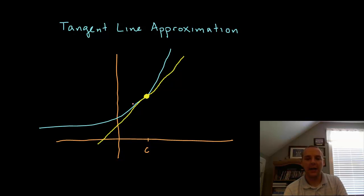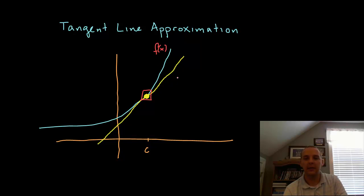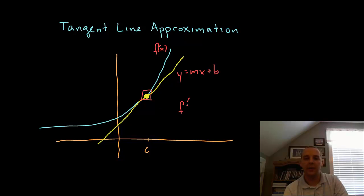A tangent line to a curve is a line that comes and lightly touches a curve or a function f of x at a particular point so that the y values agree, but not just that — also the slopes of the function and the slopes of the tangent line also agree. If this is f of x (the blue line) and the yellow line is y equals mx plus b, at the point of tangency you would expect the slope — written as f prime, the derivative of f at the point c — to agree with the slope of the tangent line, namely m.